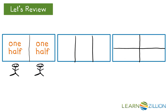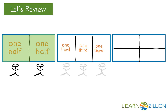Two people can equally share this one half. Two halves make up the one whole. The middle whole has been partitioned into three equal shares, where each piece is called one-third. Three people can equally share this one whole, and three-thirds make up the one whole.